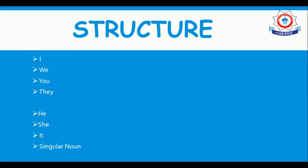In the structure, the subject can be: I, we, you, and they — or he, she, it, and a singular noun. I have differentiated them by giving space between them. With the subjects I, we, you, and they, S or ES is not added. Whereas with he, she, it, or any singular noun or singular person, S/ES is added.